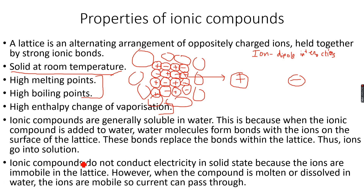Another property of ionic compounds is that they are quite hard and rigid. They are not malleable — they will either break when you strike them or retain their structure. For example, when you hit a hammer on the ionic compound's lattice, the ions will become slightly disordered and will start repelling each other.